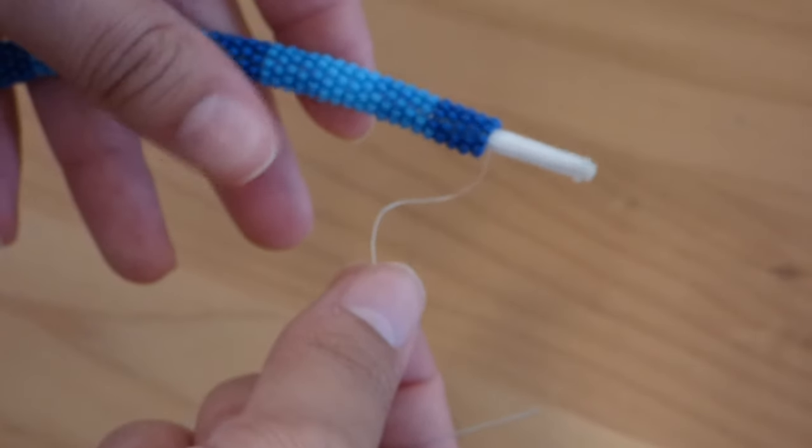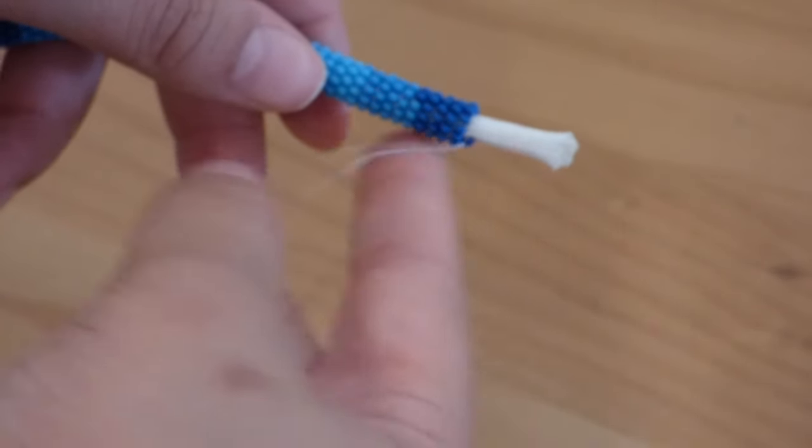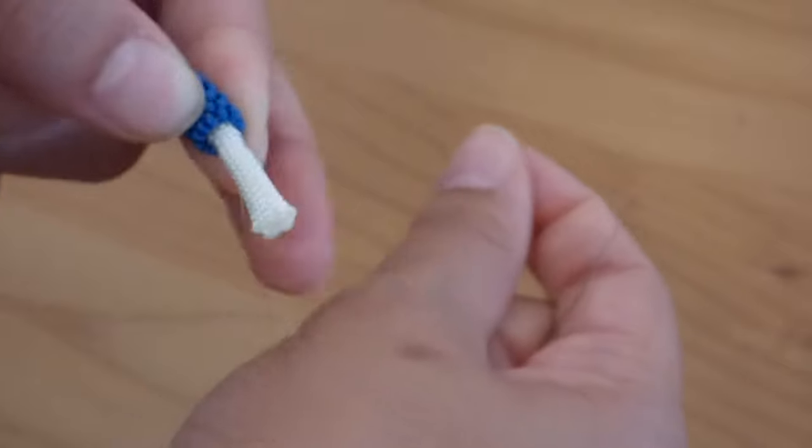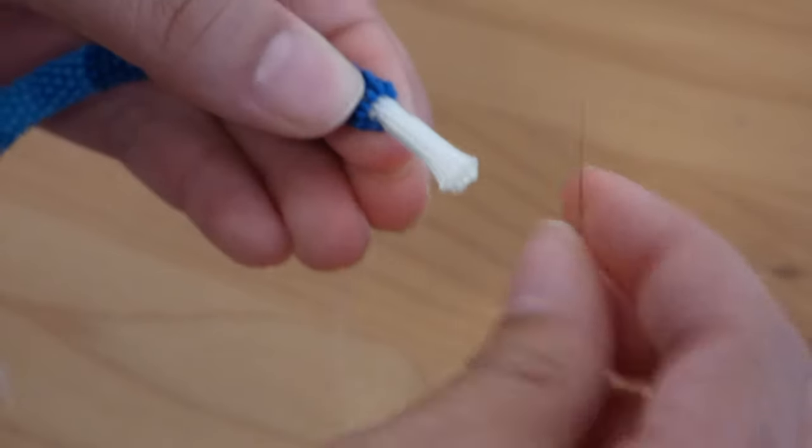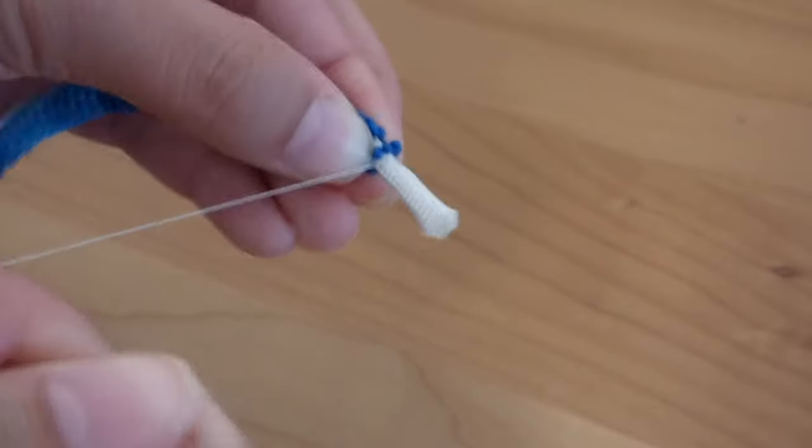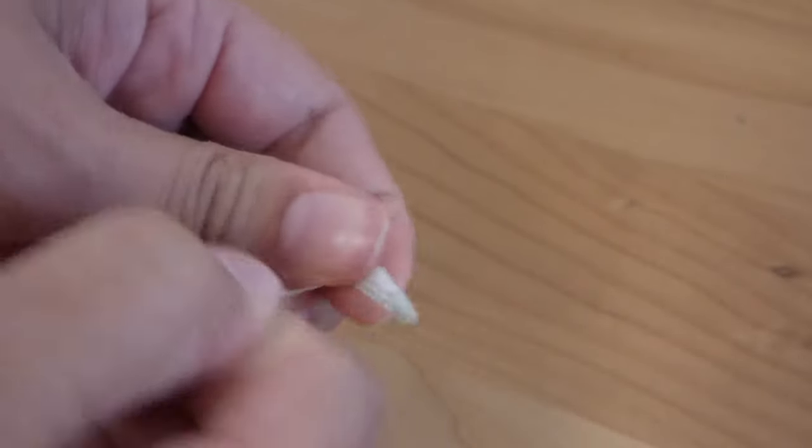So now that you've finished with your beaded rope, you should have a small little end. And I like to wrap three times around the paracord, then take the needle and stick it all the way through and pull it tight.